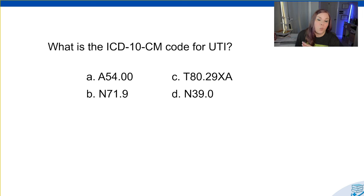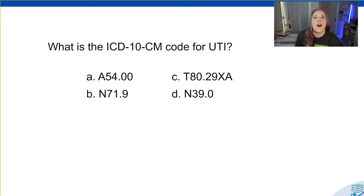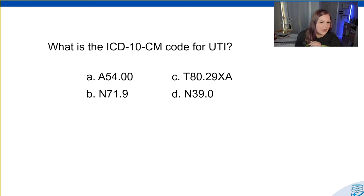So first we have this question: What is the ICD-10-CM code for a UTI? First and foremost, you have to know what a UTI is — a UTI is a urinary tract infection. Sometimes we get that confused with a URI, which is an upper respiratory infection. Now, if you're familiar with your ICD-10-CM code structure, you'll know that your genitourinary conditions start with the letter N. So if we're looking at this right away, we can kind of eliminate two options — even if you had no idea whether N codes were urinary codes or not.